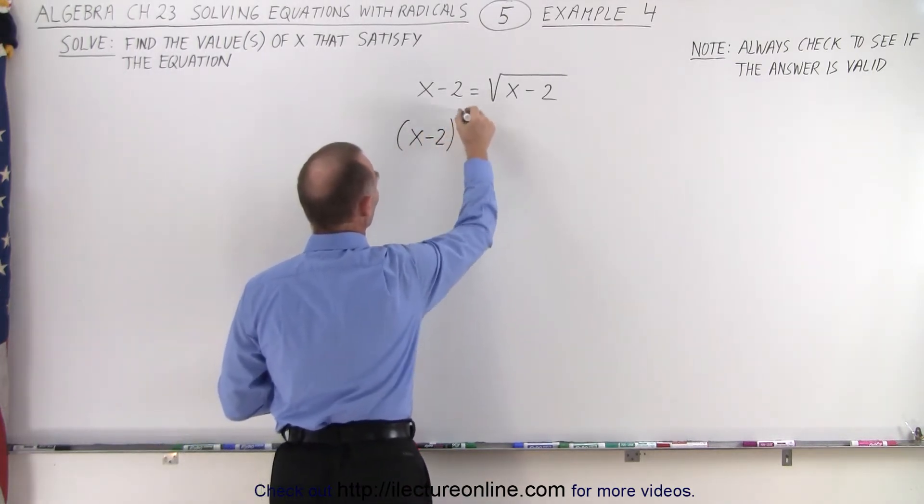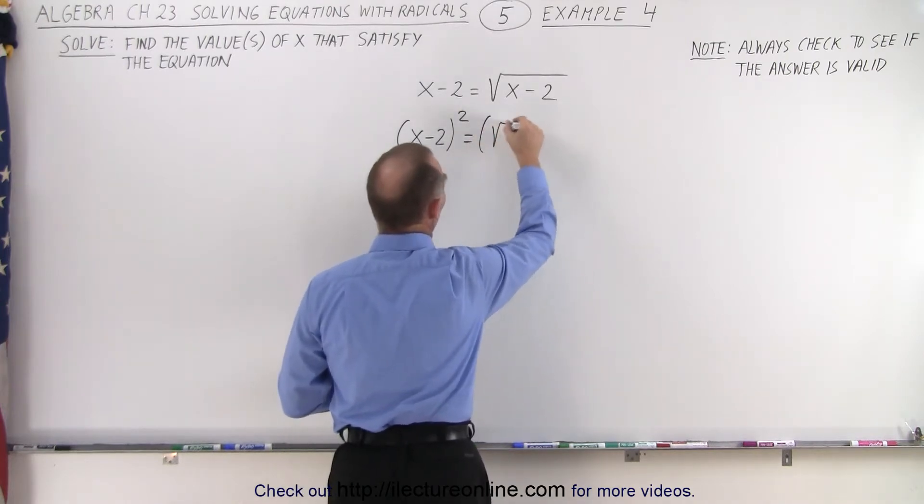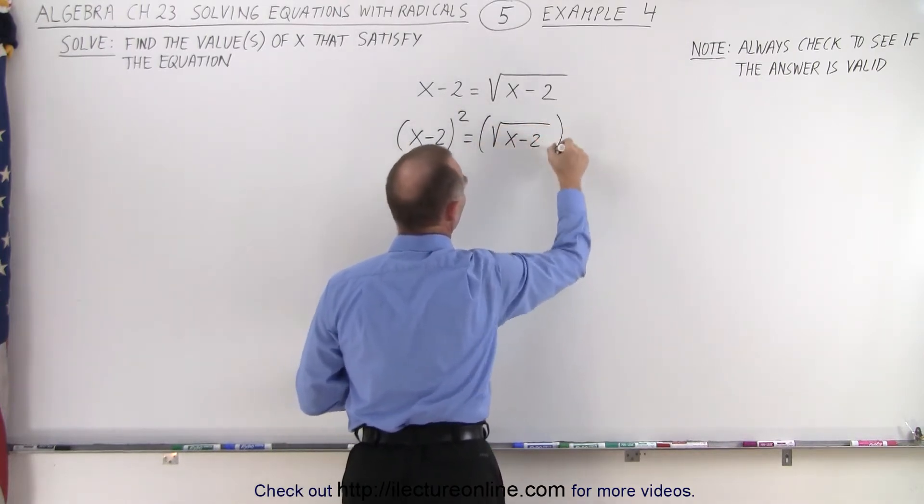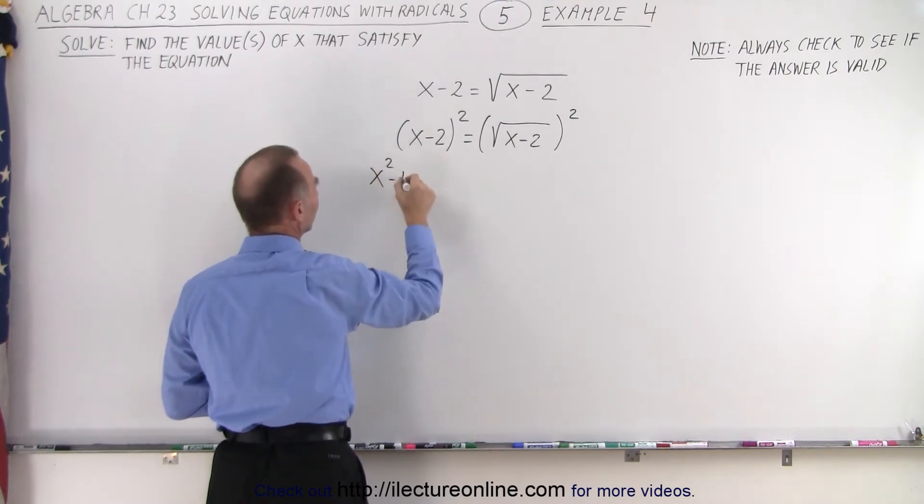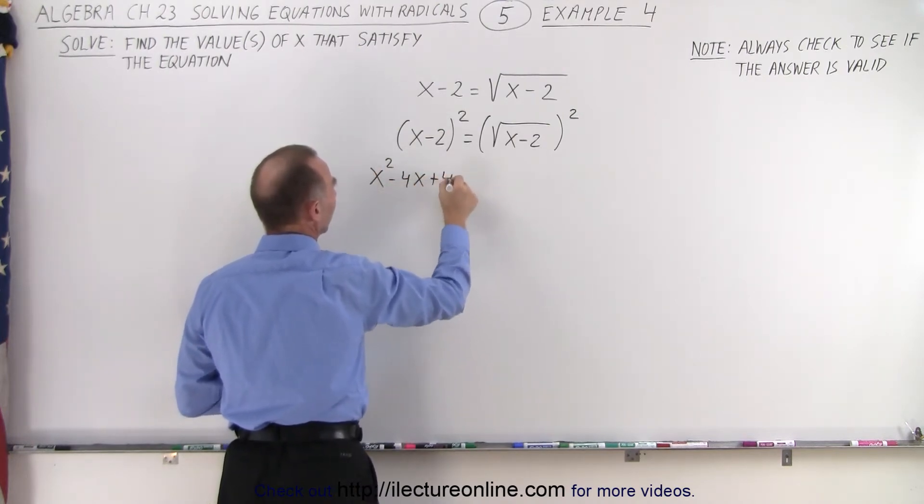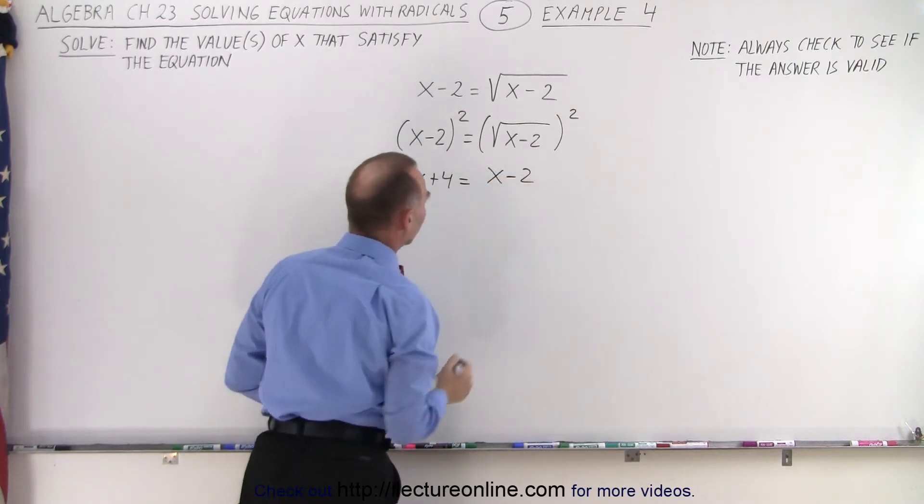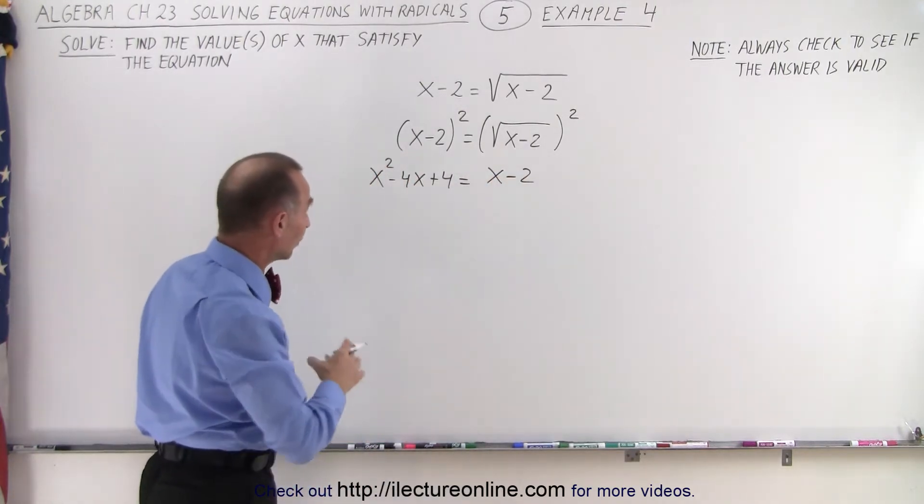So x minus 2, we're going to square that. And we're going to square the right side as well. On the left side we get x squared minus 4x plus 4. And on the right side we simply get x minus 2.